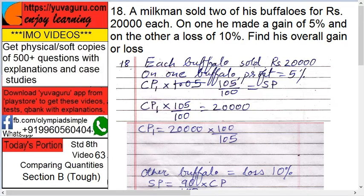Each buffalo was sold for Rs. 20,000. For the first buffalo, profit equals 5%. To find CP1: if I brought something for Rs. 100, how much should I sell it with 5% profit? 105, right? So CP1 multiplied by 105 upon 100 equals the selling price of one buffalo.